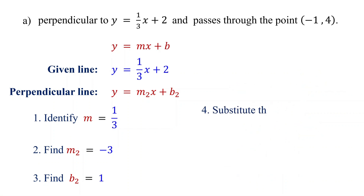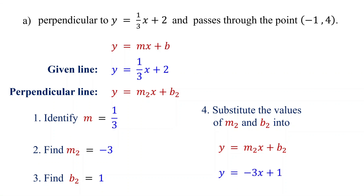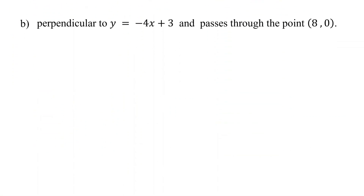Finally, substitute the values of m2 and b2 back into y equals m2x plus b2. Replace m2 with negative 3 and b2 with 1. This is the equation of the perpendicular line in slope-intercept form. Now, let's try an example with an integer slope. We will also convert the equation to standard form after writing it in slope-intercept form.